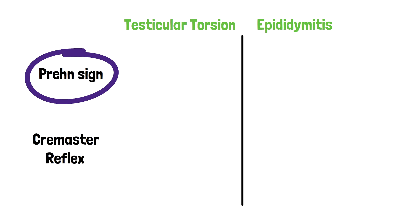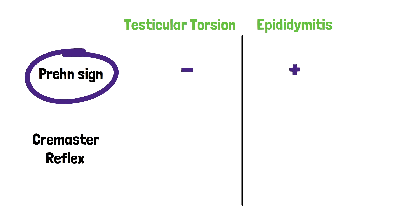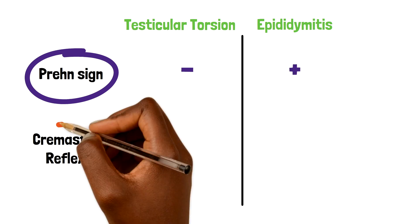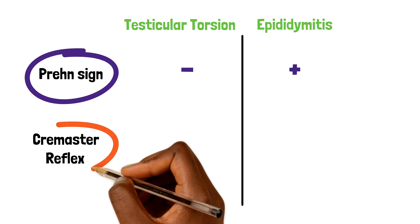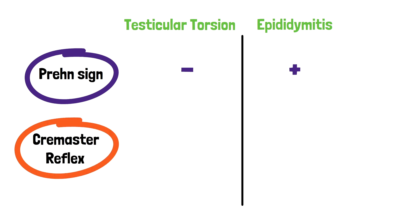A positive Prehn's sign basically occurs if testicular pain is improved on lifting the testicle upwards. In testicular torsion, this is negative, meaning that lifting up the testicle doesn't get rid of the pain. In epididymitis, it is positive. The cremasteric reflex occurs when the testicle moves upwards on stroking the inner thigh. If this occurs, it is a positive cremasteric reflex.